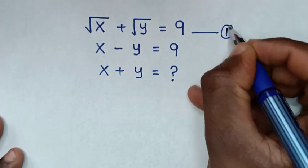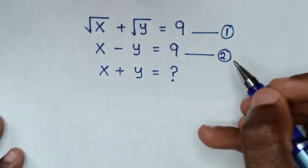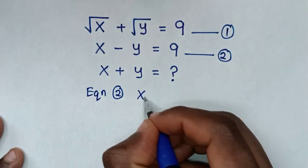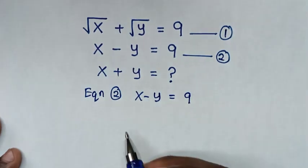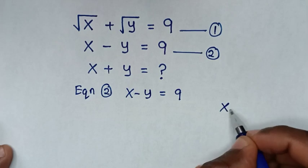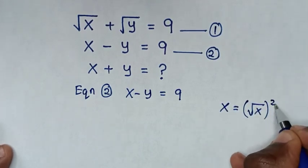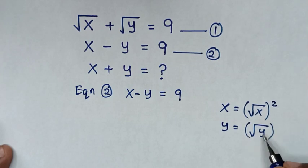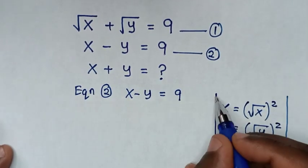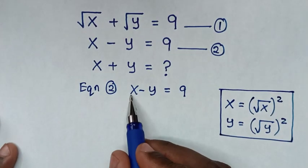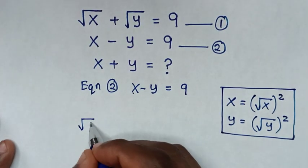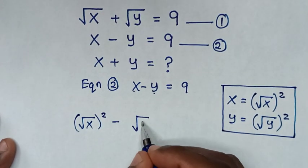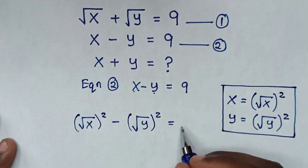First, we let the first expression be equation 1, and x minus y equals 9 be equation 2. From equation 2, we rewrite x as (√x)² and y as (√y)². Substituting into equation 2 gives (√x)² minus (√y)² equals 9.